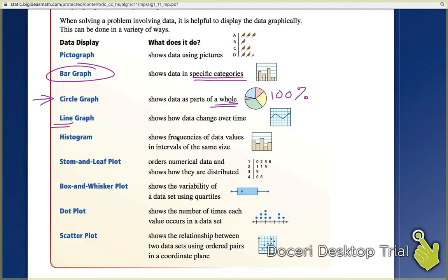Line graph, the line graph is change over time. So it has to deal with time. It's gotta be over a period of months or years or days or seconds, something like that. Histogram, intervals of the same size. We've dealt with histograms before. Stem and leaf plot. We've seen on the homework here a little bit, shows numerical data, shows how they are distributed.